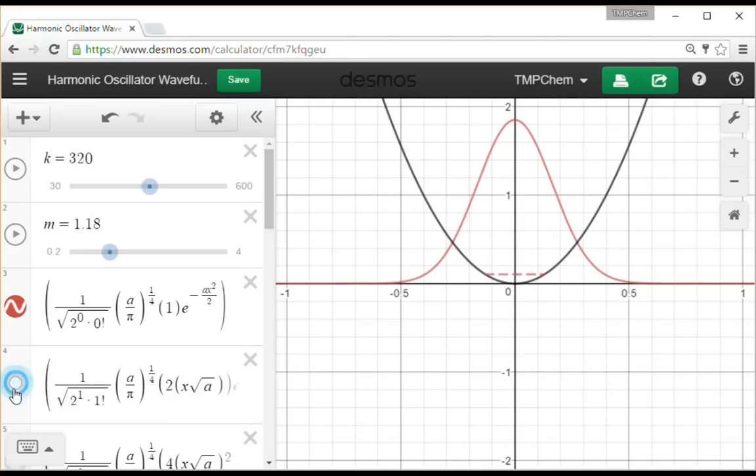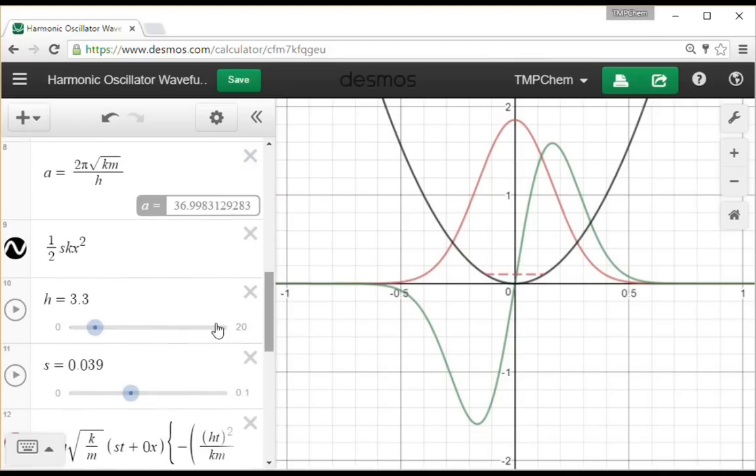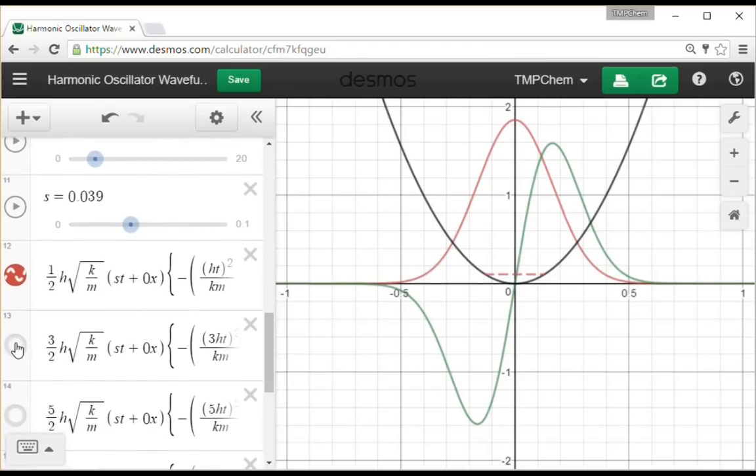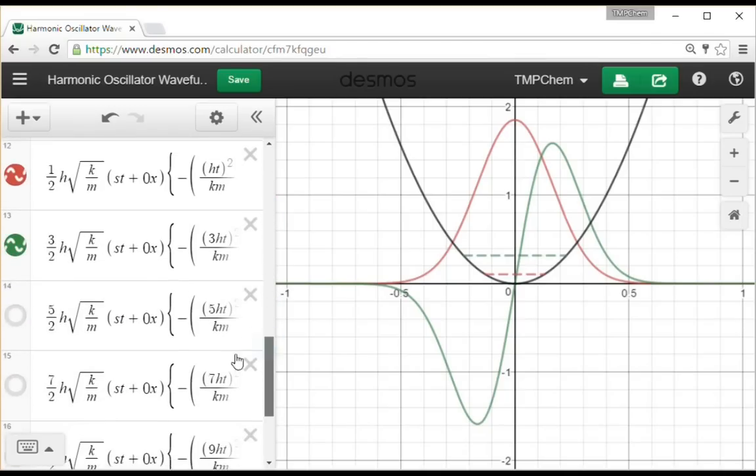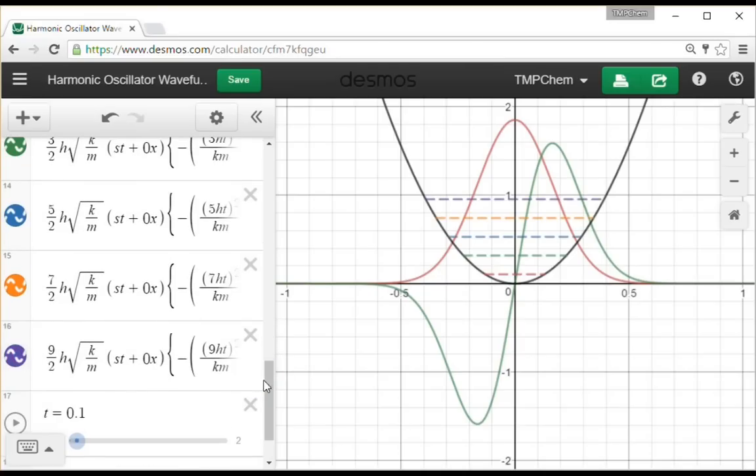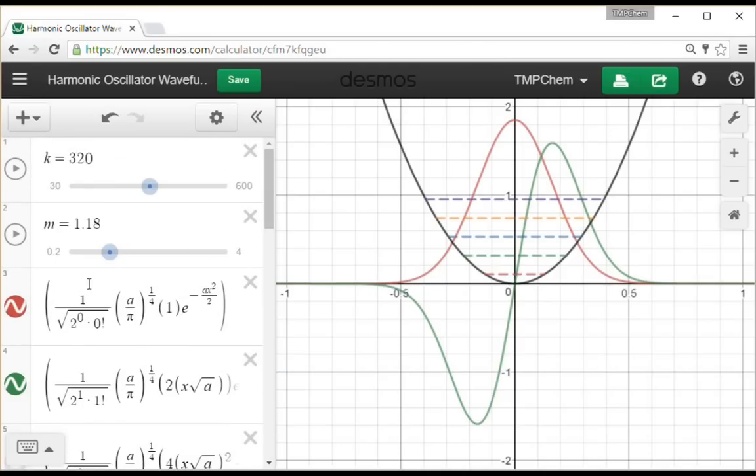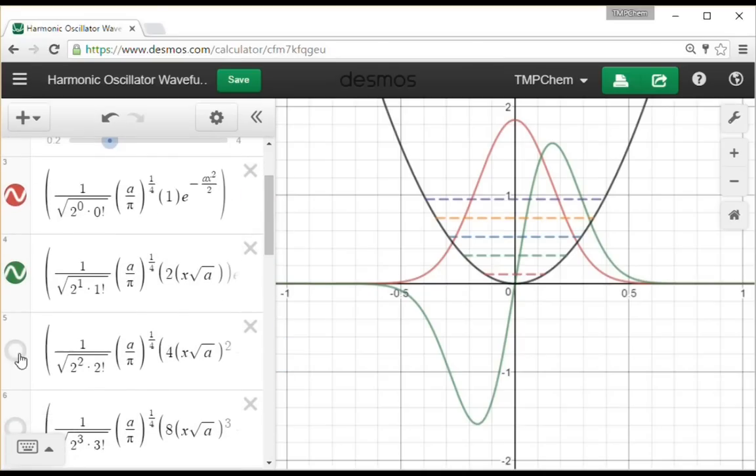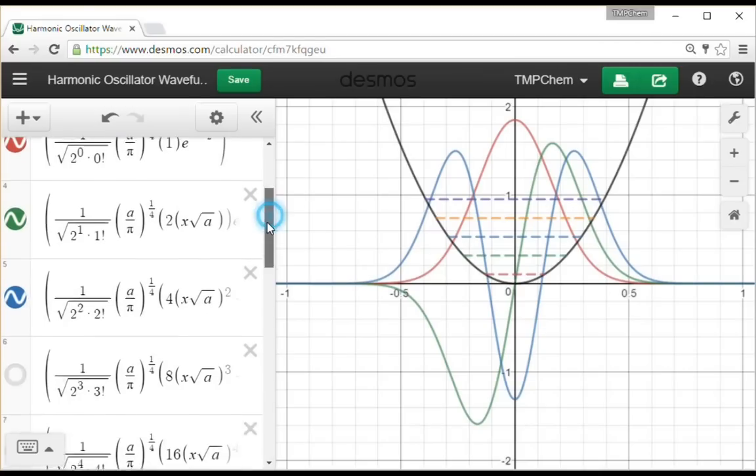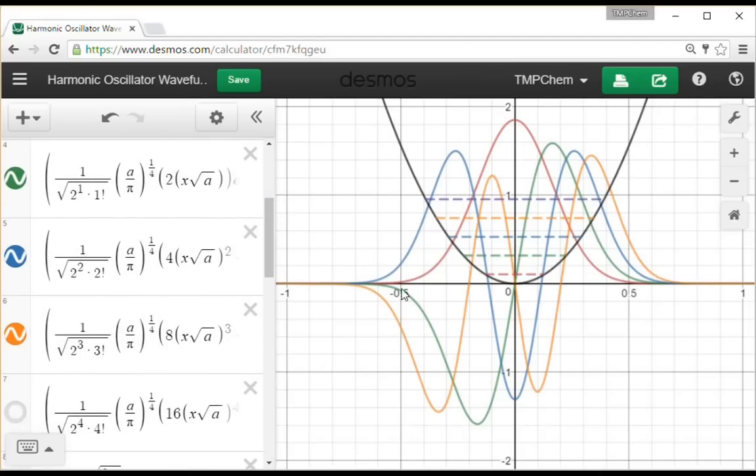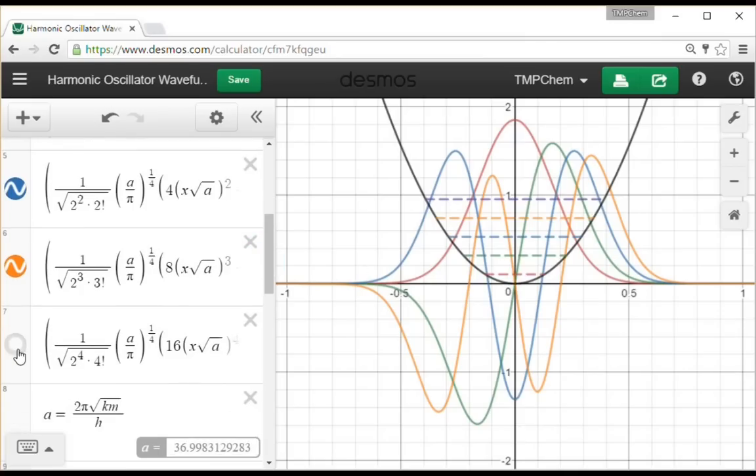What about psi 1? There's our two lobes, as I mentioned. I can turn on its energy as well. For psi 2, 3, 4, and 5, I'll throw those on there as well. We see the two lobes. Psi 2, it's multiplied times a second order polynomial, there are three lobes. Psi 3 is going to have four of them, this graph is going to start getting crowded. Psi 4, you see all five of them on there.